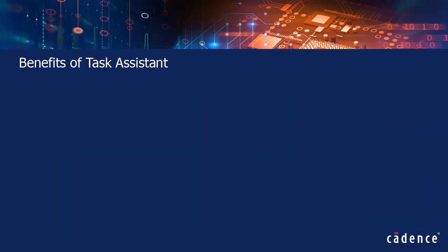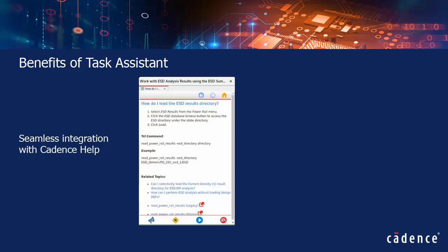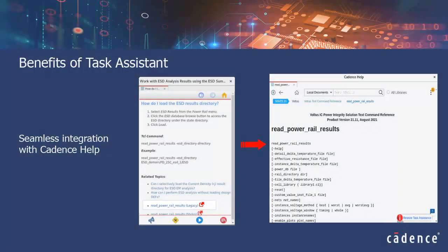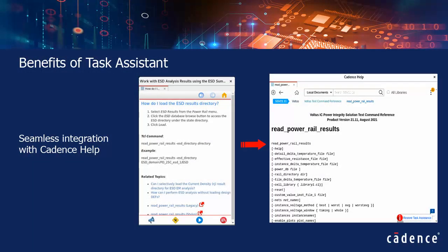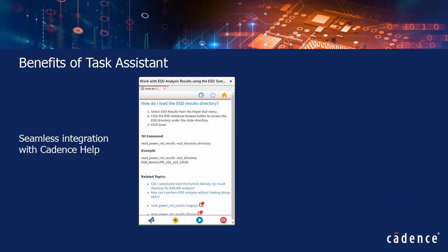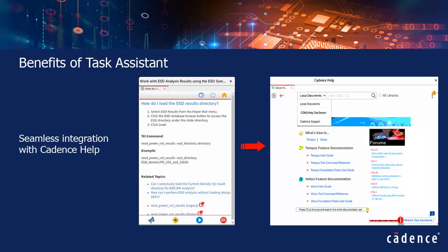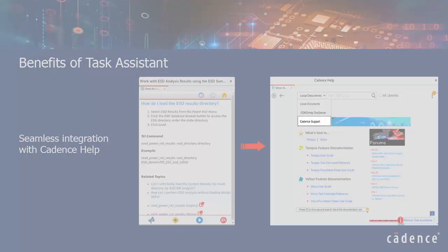Another benefit of Task Assistant is seamless integration with Cadence Help. If you need more detailed information, you can access it within a Task Assistant topic — just click the Related Topic link and you will be redirected to the detailed help content. You can also access Cadence Help via the Cadence Help button and search for local documents or ESD online content.